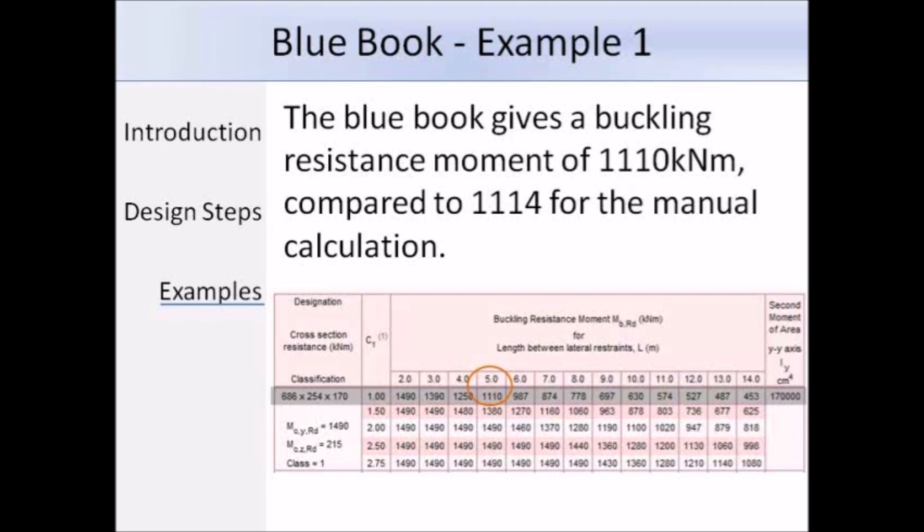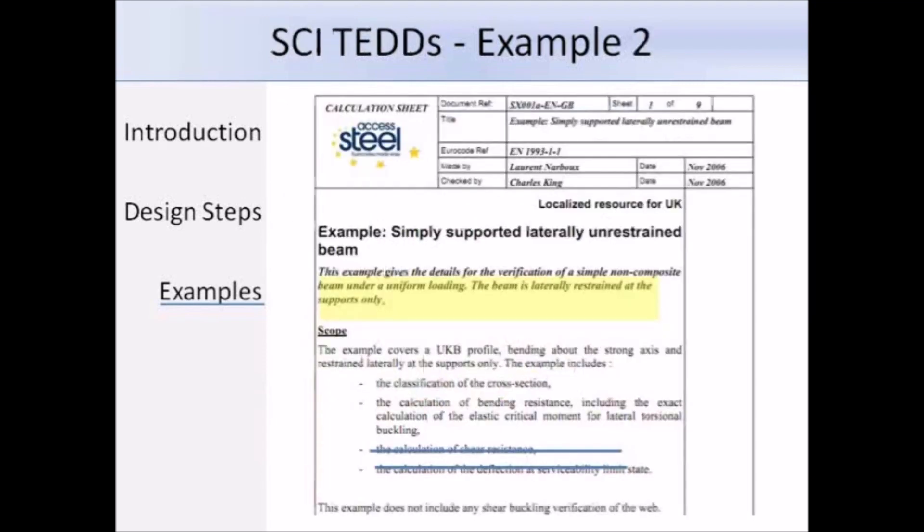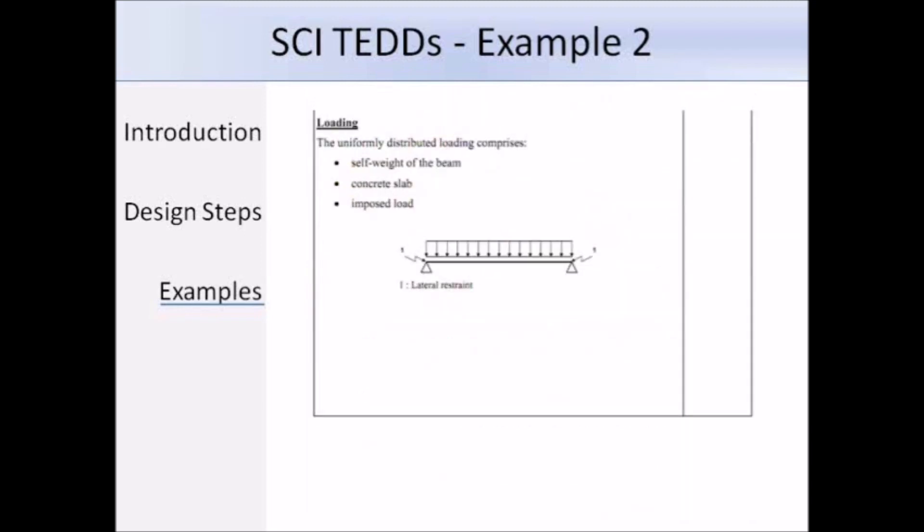So this is the second example I'll go through, and it's an example from the SCI website, and what we have is a simply supported laterally unrestrained beam, and rather than go through the whole calculation, I'm only going to refer to the sections related to LTB. So here is a diagram of the beam. We have the lateral restraint at the ends, and a UDL is applied along the whole length of the beam.